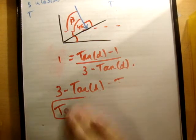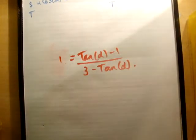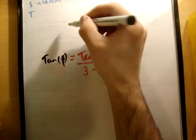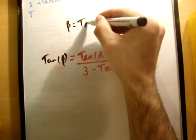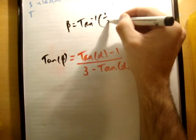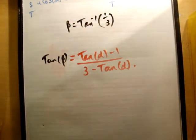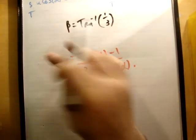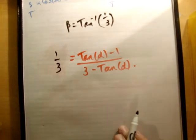And part 3 says, what happens if the particle lands at beta, where beta is equal to inverse tan of a third. Well, if it's inverse tan of a third, we just need to plug it in here. So tan beta is a third.